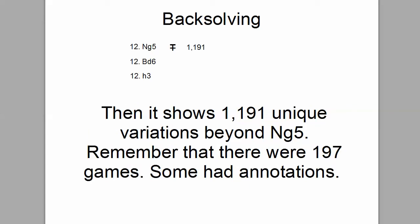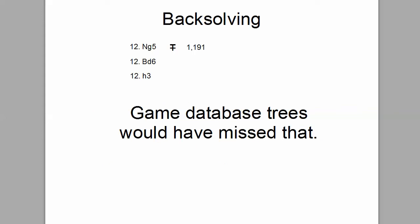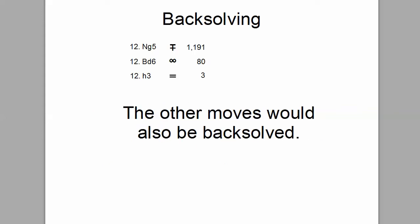Then it shows 1,191 unique variations beyond Knight G5. Remember, there were 197 games, and some of them had to have annotations. All it takes is one variation to overturn the entire line, and that variation may have been in the notes to a game — which game database trees would have missed.